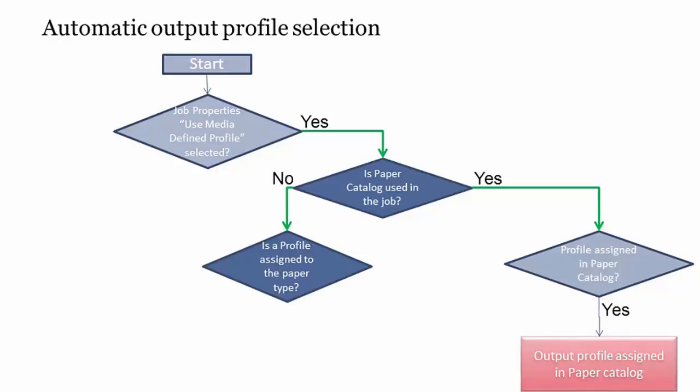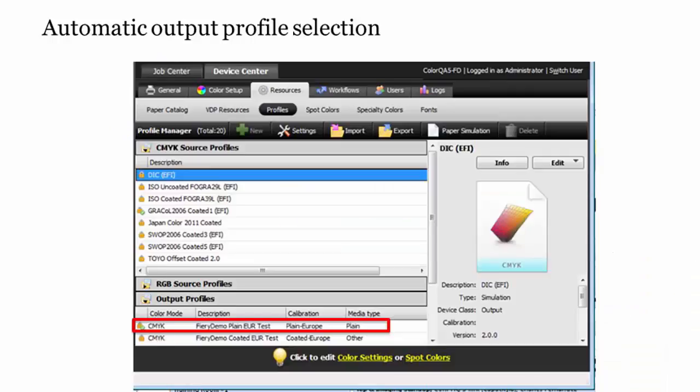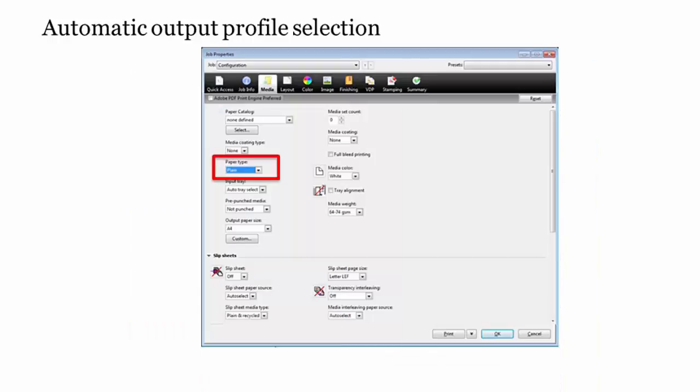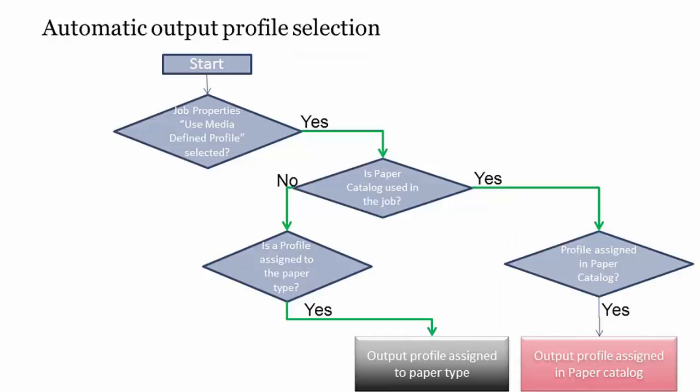Some Fierys don't offer a paper catalog or for whatever reason you might not be using the paper catalog. If paper catalog is not used in the job, then we look to see if there's a profile assigned to the paper or media type. That's configured here in the Device Center of Command Workstation under the Output Profiles. You can see in this example that the Plane Media Type is assigned to use the Fiery Demo Plane Profile. So if in Job Properties, when I configure to print the job on the Media tab, I choose the Plane Paper Type, since I'm not using a paper catalog entry, in this case, the profile will be selected based on the media assignment. So we'll get the output profile assigned to the paper type. Notice that if I use the paper catalog and I haven't done any associations in the paper catalog, this is also how the profile selection is made.